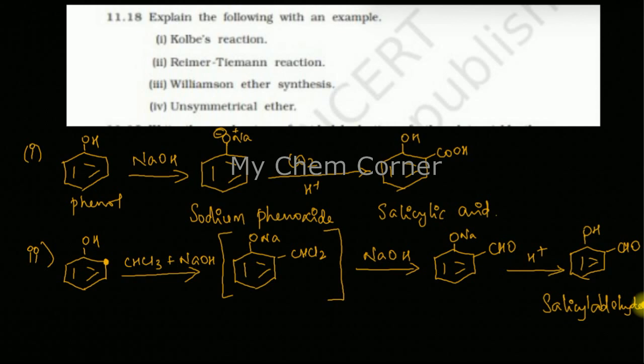So this is the preparation of salicylaldehyde. Next one is Williamson's ether synthesis. So here for Williamson's ether synthesis, I'm just going to take, say, a CH3-O-Na with sodium. Only one group of carbon is there, so it's called a methoxide.